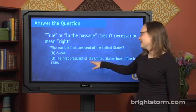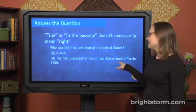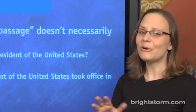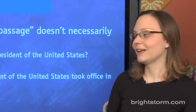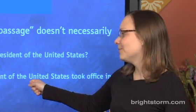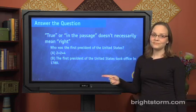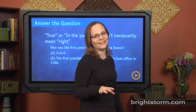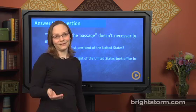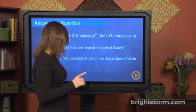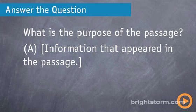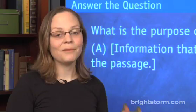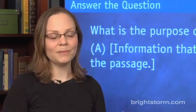Even if it's sort of on topic — for instance, 'the first president of the United States took office in 1789' is a little closer to being related to the question, but it's still not answering the question. It's also true, but it's not right because it's not answering the question. On the SAT it'll look more like this: you might have a question that asks what's the purpose of the passage you just read, and an answer choice might not tell you the purpose, but just parrot back information you covered in the passage. Because it's familiar and because it's true, you might be drawn to it.